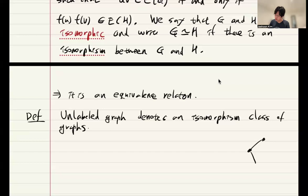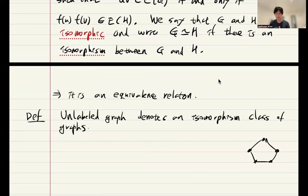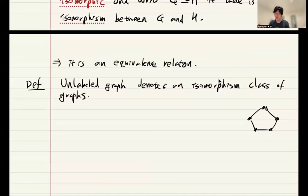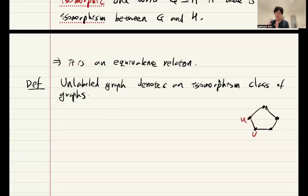This denotes an isomorphism class of graphs. Simply, we draw in this way, where the names on the vertices are all lost. This does not mean that we cannot specify vertex. We can still say that this vertex is U, this vertex is V. But that doesn't mean that this has name U, this has name V. We just refer this vertex and then we give the name of this vertex for our convenience.